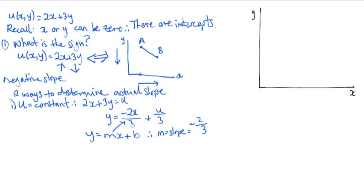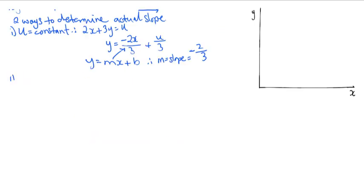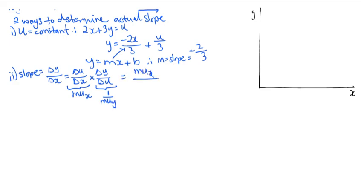Another way to calculate the slope is to use the utility function. We know that slope is equal to rise over run, which is change in y over change in x. This is equal to change in u divided by change in x, which is the marginal utility with respect to x, times that by change in y over change in u, where that piece is 1 over the marginal utility of y. Therefore, the slope is the marginal utility of x divided by the marginal utility of y.